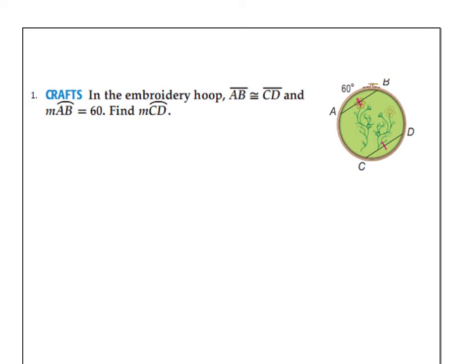Maybe some of your grandmas or family members like to embroider things. And so this is an embroidery hoop. You put like a dishcloth in there or a nice thin piece of cloth and then you sew a picture onto it. And so in this embroidery hoop, segment AB is congruent to segment CD. You can see the red tick marks on them. And the measure of arc AB is 60 degrees. What would be the measure of arc CD?